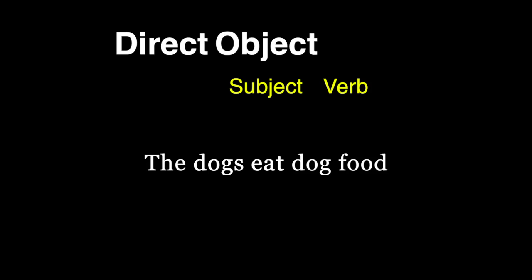Here is a trick that will help you find the direct object of a sentence. First, find the main verb and the subject. In the sentence, the dogs eat dog food. Eat is the verb and dogs is the subject.